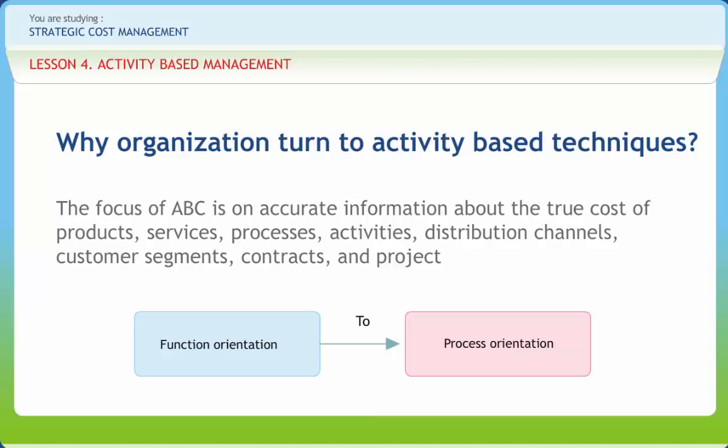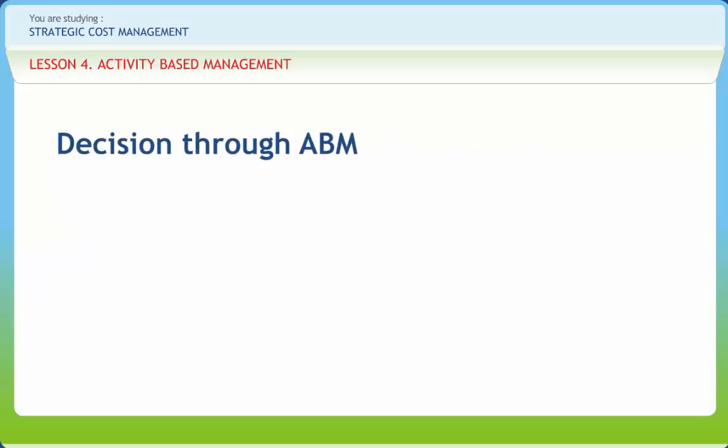Activity Based Management makes this cost and operating information useful by providing value analysis, cost drivers, and performance measures to initiate, drive, or support improvement efforts and to improve decision making. In order to help managers determine the effects of changes in spending patterns and resource allocations throughout the organization, a model must be able to simulate resource levels as a result of process improvement initiatives, product design variation, and product mix changes.